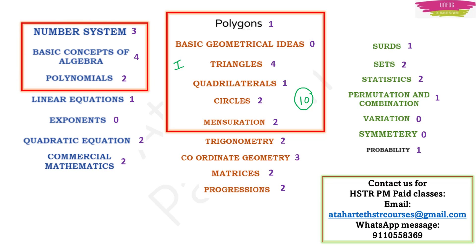The second group of chapters to study is Basic Concepts of Algebra, Polynomials, and Number System. This group is also very easy and important. Covering these chapters well will allow you to score nine marks — nine questions answered correctly.